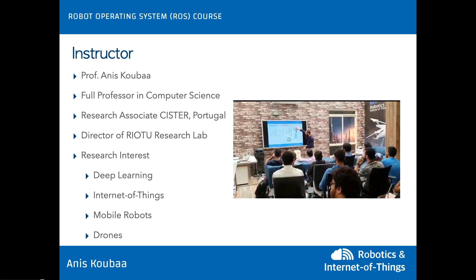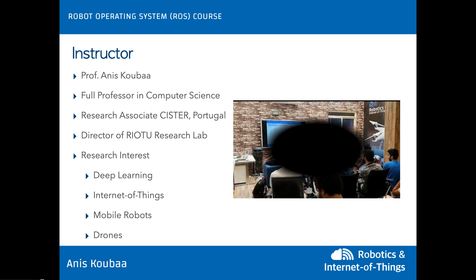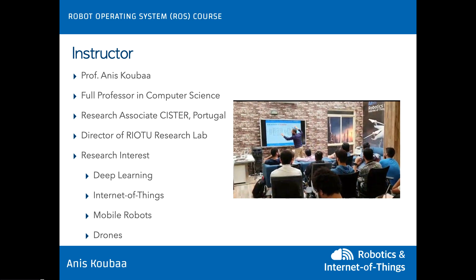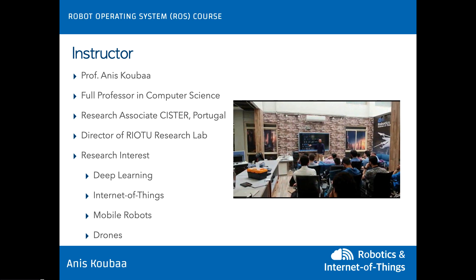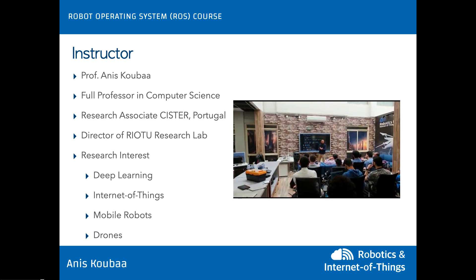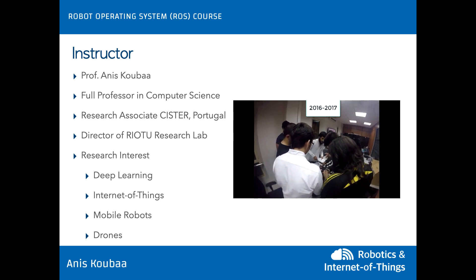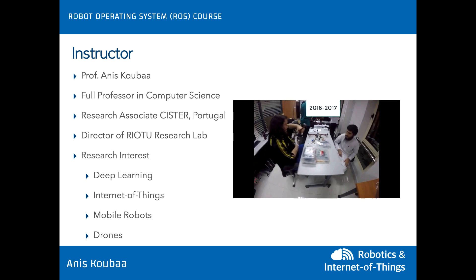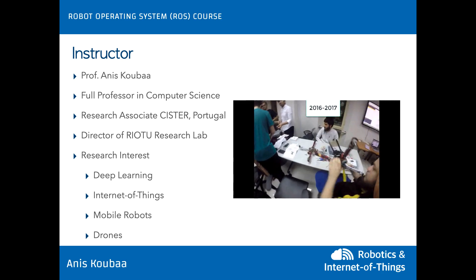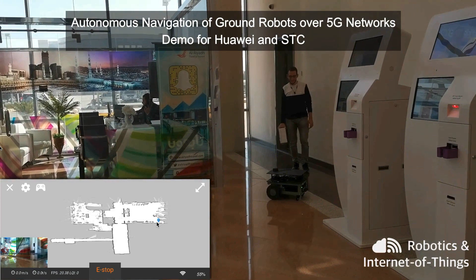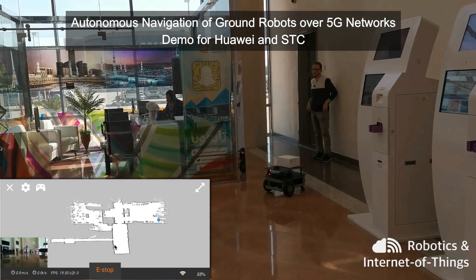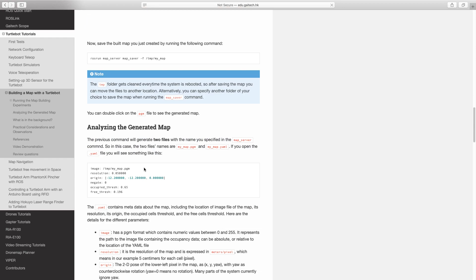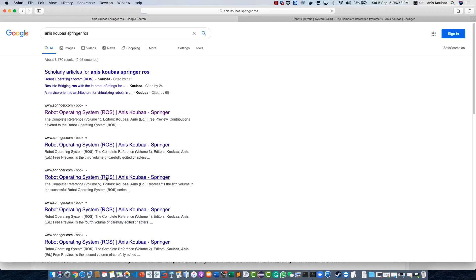I'm a full professor in computer science and I enjoy and have long experience developing programs with ROS for both academia and industry. I'm also the leader of the Robotics and Internet of Things Lab at Prince Sultan University, where I'm developing research around deep learning, Internet of Things, robots, and drones. I have taught ROS for university students, which allowed me to understand the problems that make students struggle to learn ROS and develop solutions to overcome them. I have also developed training programs for learning ROS in the context of research projects. I've developed several contributions to ROS, including the ROS-Link protocol to ensure internet connectivity of ROS-enabled robots, several free tutorials on robot operating systems available on the Gaitech EDU website, in addition to five book editions on ROS with Springer publisher, which are among the bestselling books in Springer.